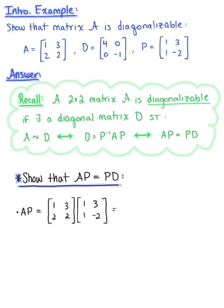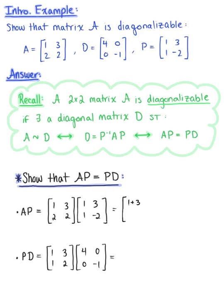Applying the row-column rule to find the product of matrix A and matrix P: the first row times the first column is 1 plus 3; first row times the second column is 3 minus 6; second row times the first column is 2 plus 2; second row times the second column is 6 minus 4. And so we are left with the final answer of 4, negative 3, 4, negative 2.